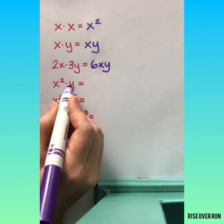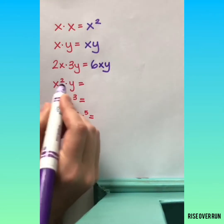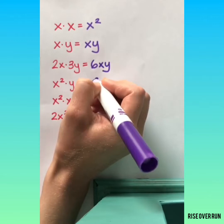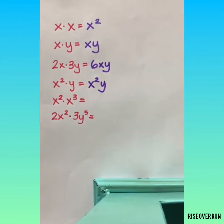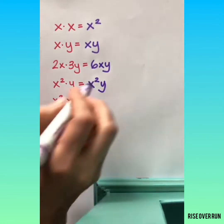x squared times y, again these are different variables, there's not a way to combine that, so we write x squared y. That's one term.